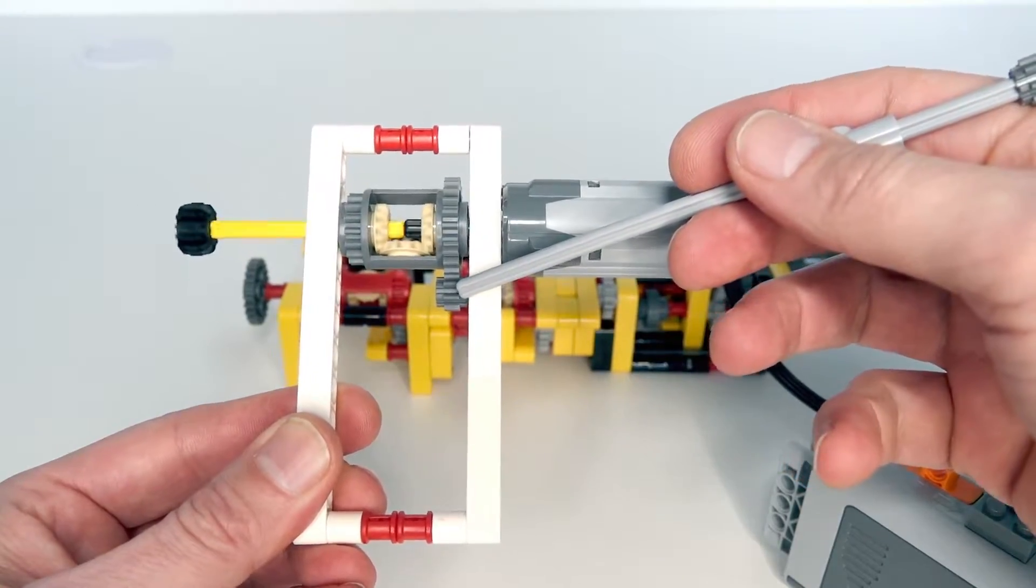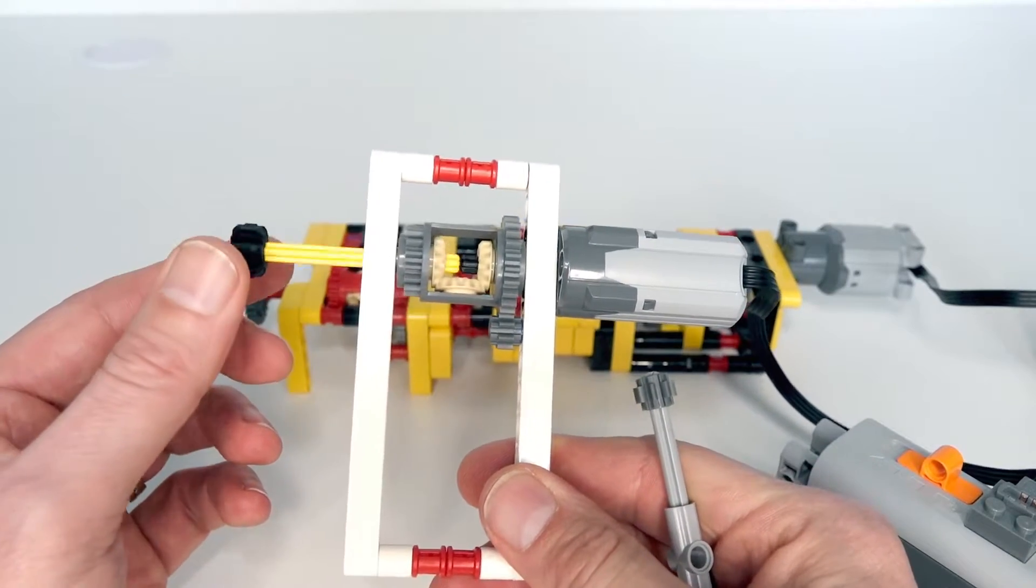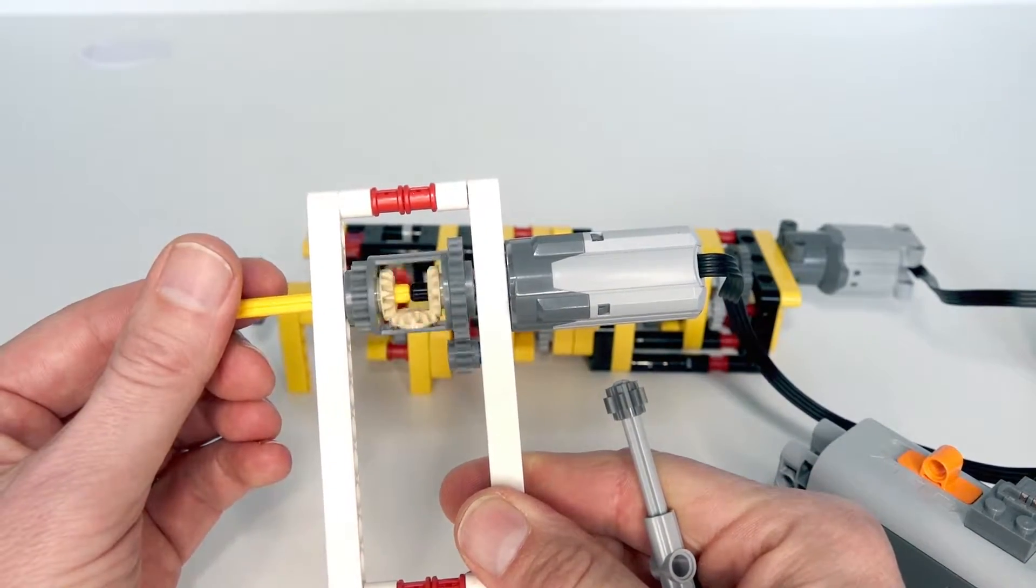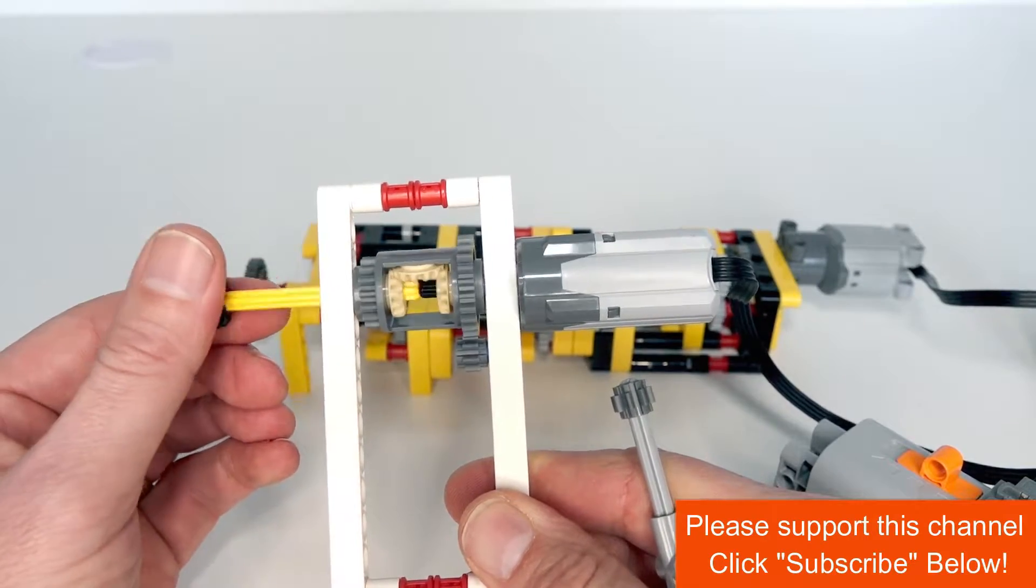This small gear has got a friction pin on it. But as soon as we put some load on the output, we can see that the differential starts turning. So it reacts to the load on the output.